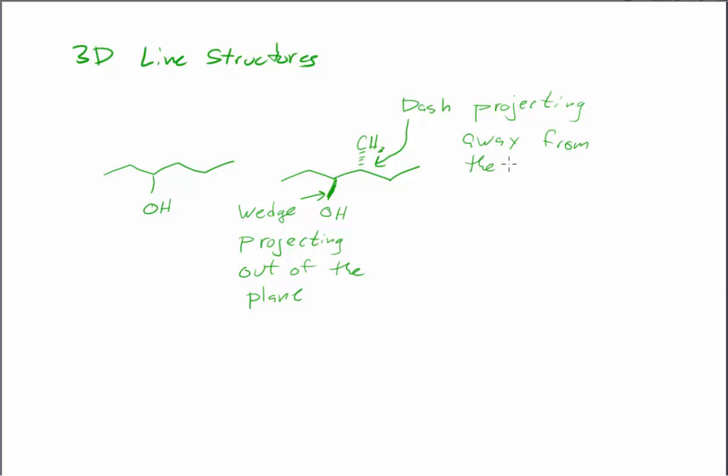Or we'll say projecting back from the plane, away from the viewer. So the dash means it's going back into the plane of the paper or into the plane of the screen. So it's projecting away from us, whereas the wedge here is projecting towards us. And so that can help us decide, if we look at this ring, where there are six carbons in the ring, here's a methyl that's projecting towards us above the ring. And here is a methyl group that's projecting back away from us into the ring, or a CH3 group.